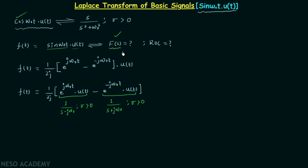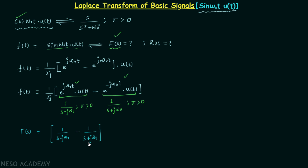Now we use the linearity property to obtain the final Laplace transform F(s). Since we are subtracting the second time domain signal from the first, we do the same in the frequency domain: we subtract 1 over (s plus jω₀) from 1 over (s minus jω₀), and then divide the result by 2j.